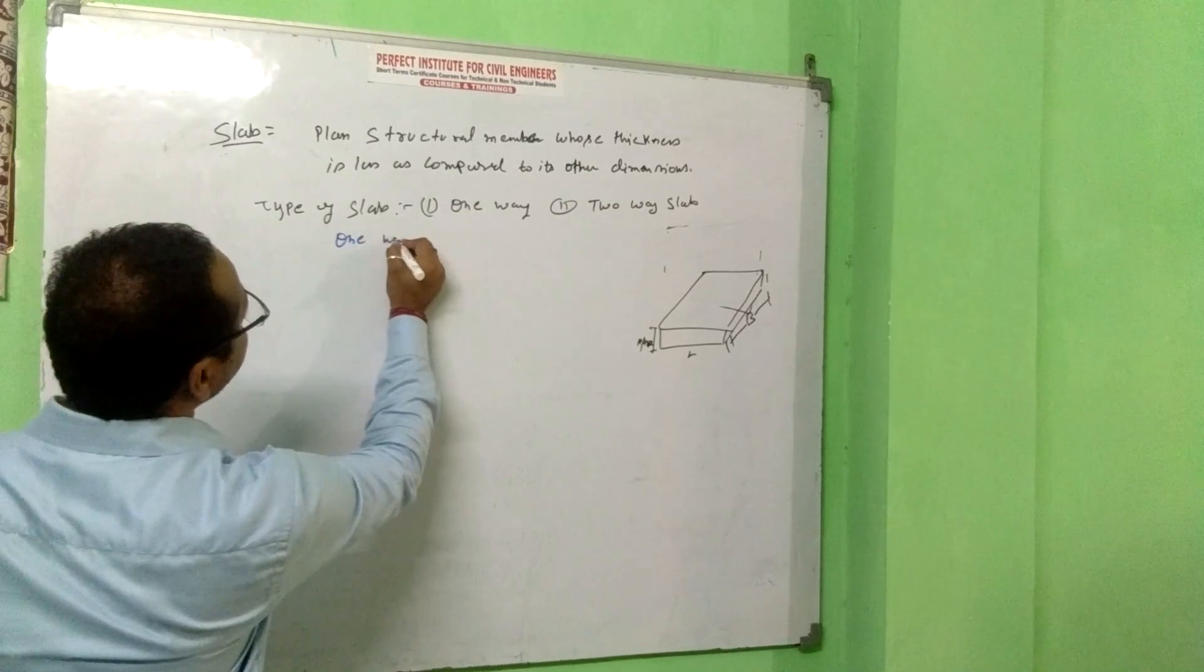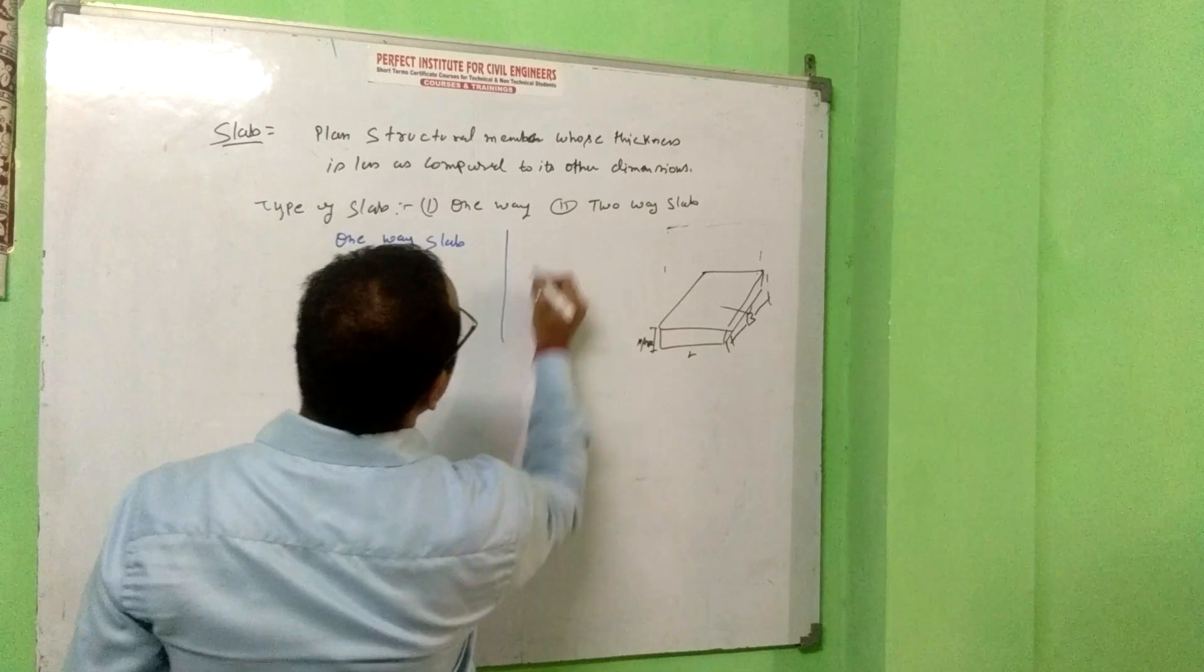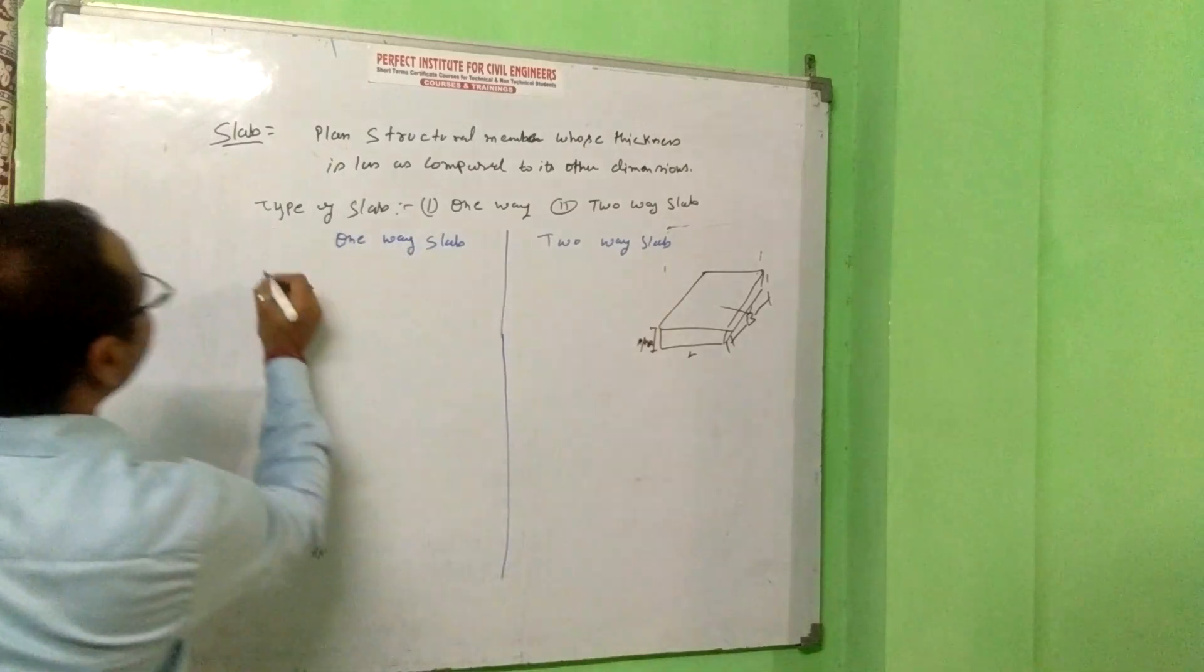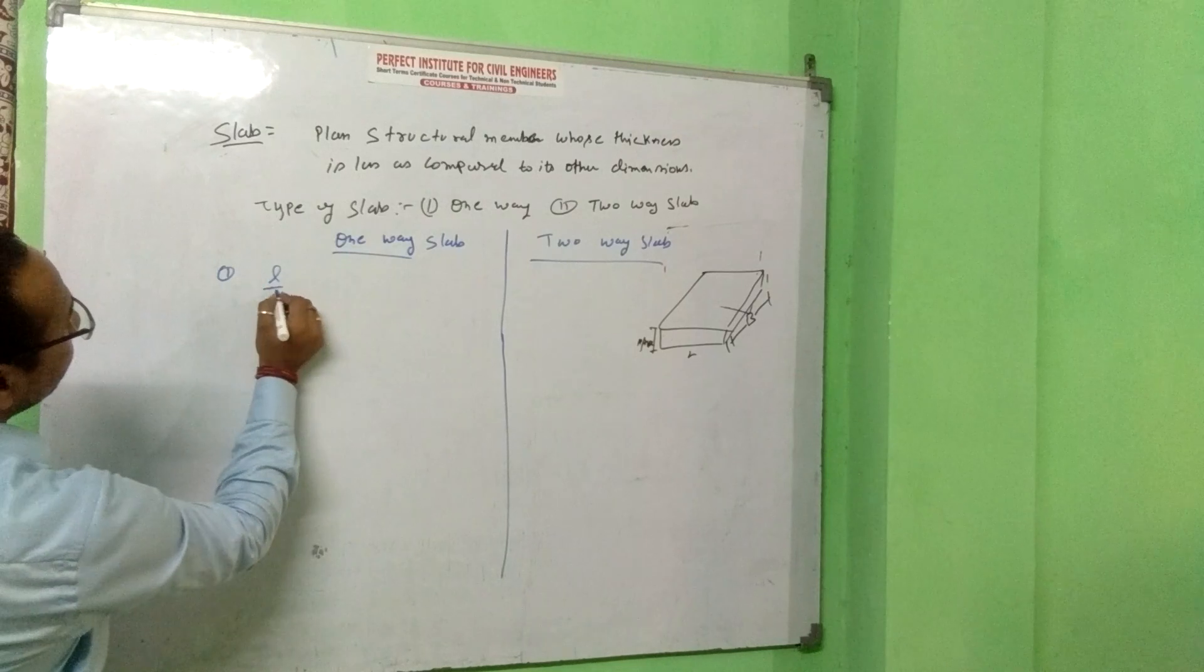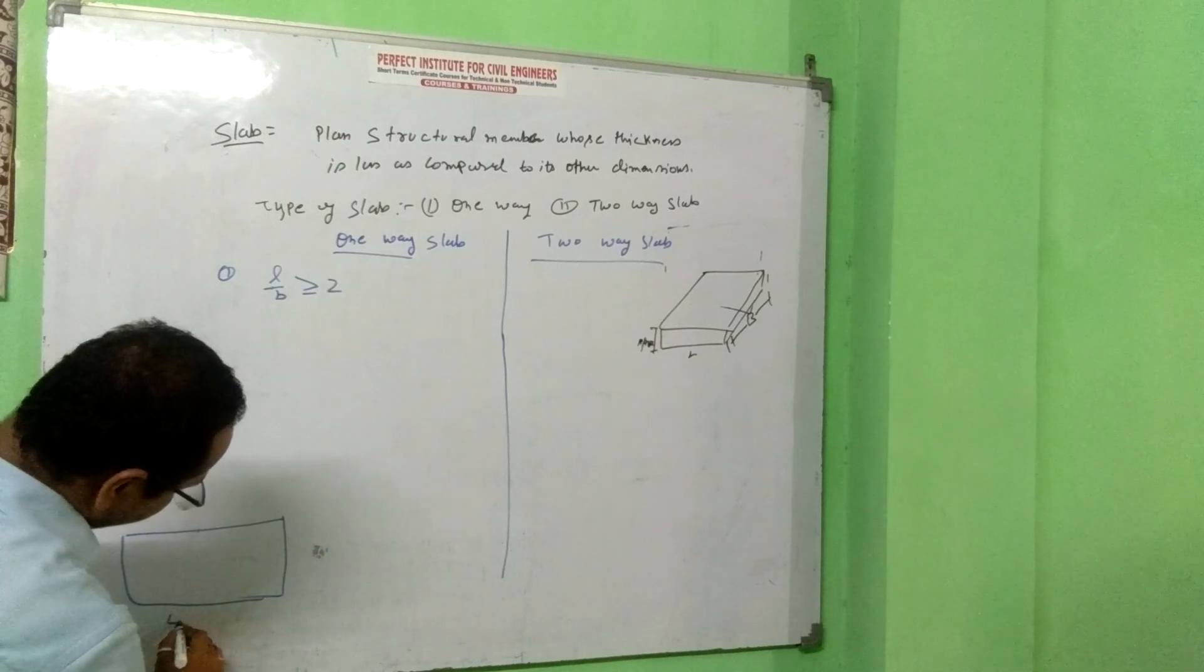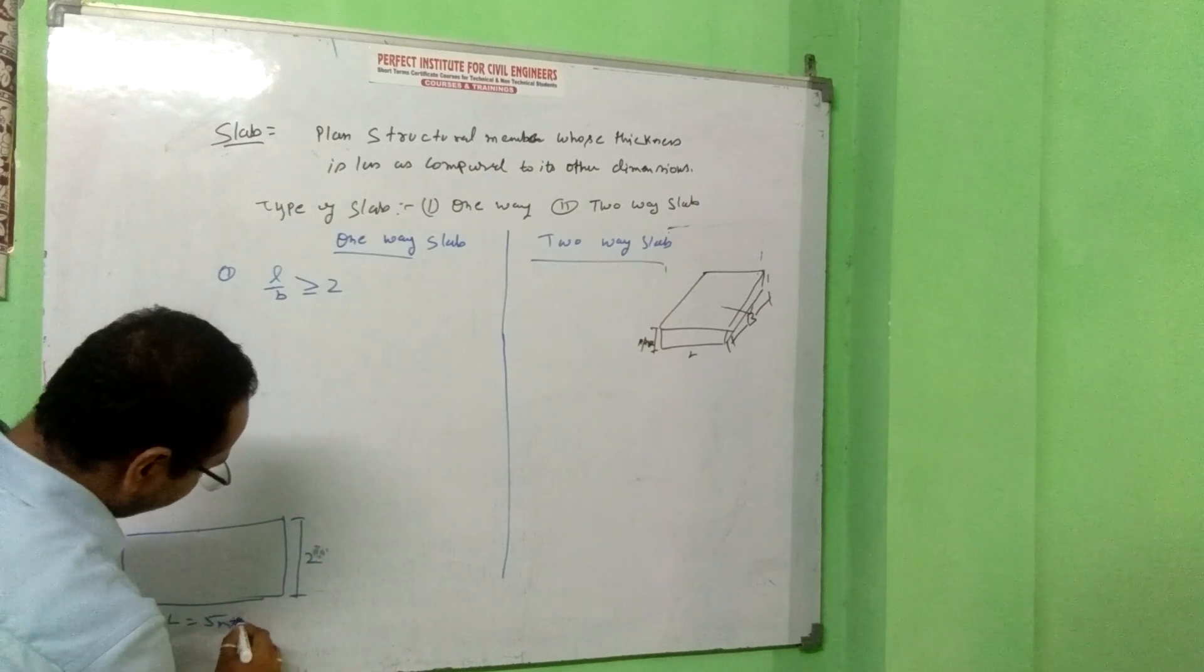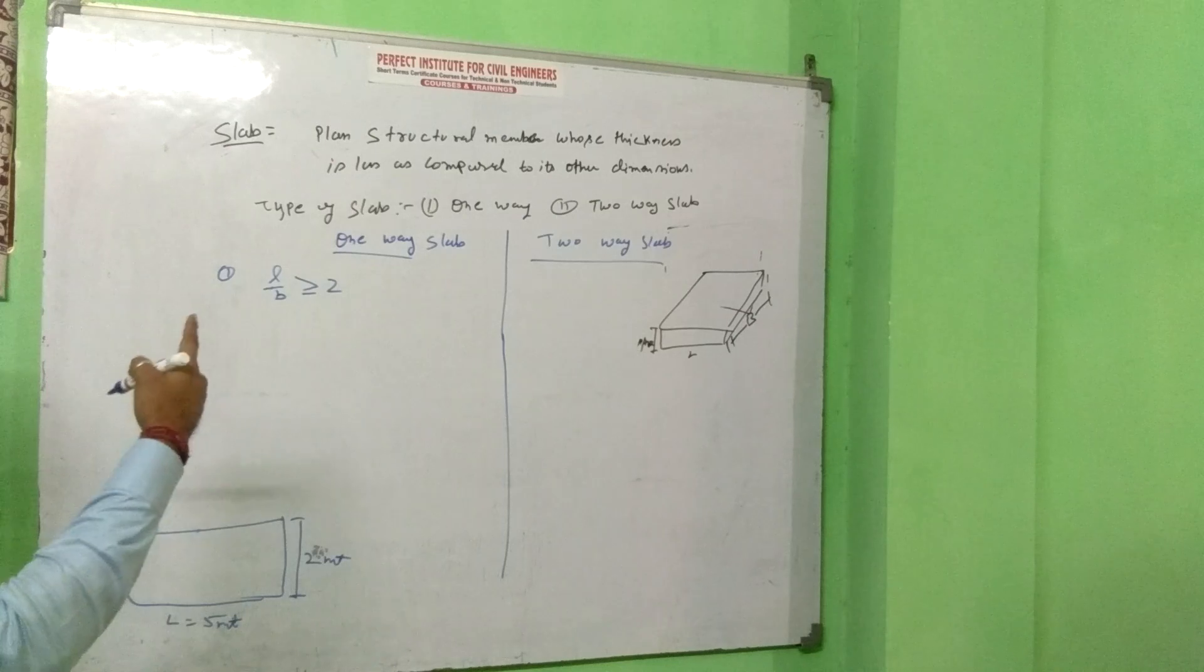One-way slab. What is the difference? First, length by width is equal to or greater than 2. If our slab is, if its length is 5 meter, width is 2 meter, this is called one-way slab. This is 5 by 2, this is greater than 2, this is 2.5.